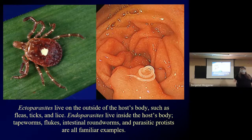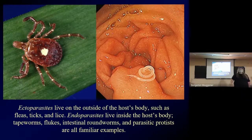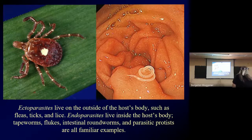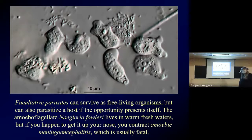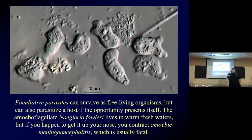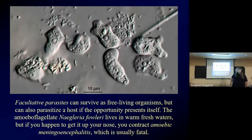There are some that live part in and part out, which we call mesoparasites — for example, a very weird crustacean that partly burrows into a whale host and lets its egg sacs protrude out of the host. We also have facultative parasites — organisms that can survive as free-living but can also parasitize a host if the opportunity presents itself.